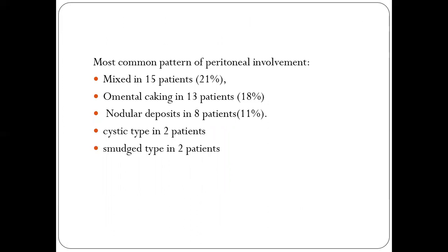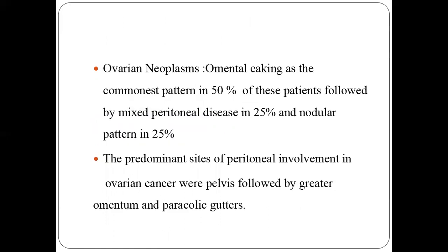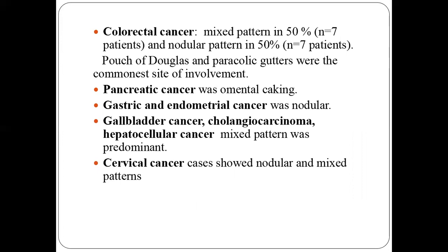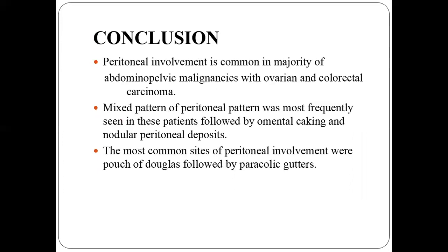The most common pattern of peritoneal involvement overall is mixed, followed by omental caking, nodular deposits, cystic type, and smudge type. Ovarian neoplasm usually presents as omental caking followed by mixed and nodular types. Colorectal malignancy is usually mixed or nodular. Pancreatic cancer presents as omental caking. Gastric and leiomyosarcoma present as nodular type. Gallbladder, cholangiocarcinoma, and HCC present as mixed type, while cervical carcinoma presents as nodular or mixed type.